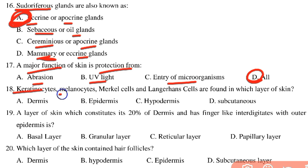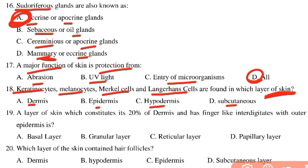Keratinocytes, melanocytes, Merkel cells, and Langerhans cells are found in which layer of the skin? These are the special cells of the epidermis.